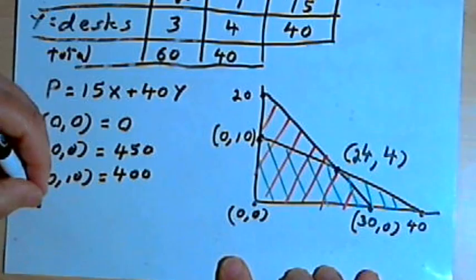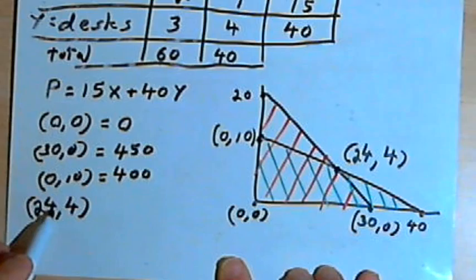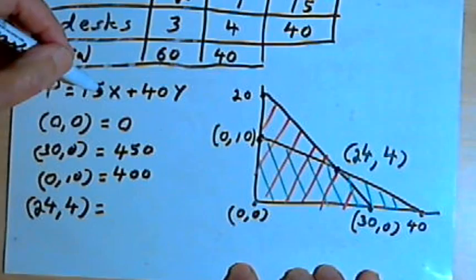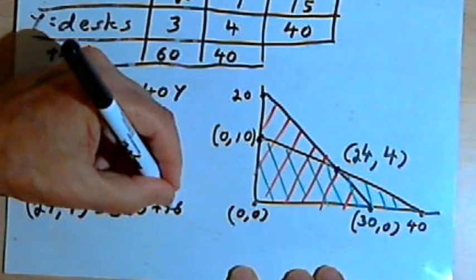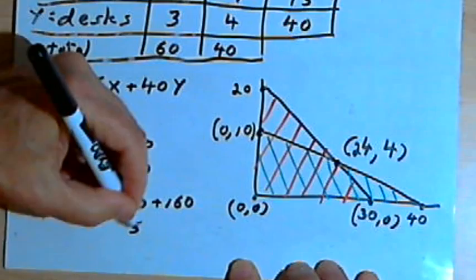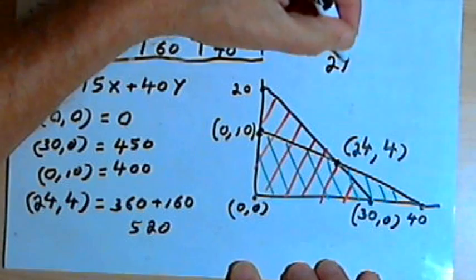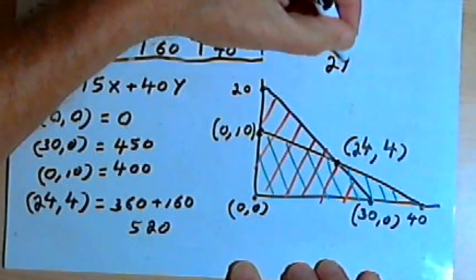Let's try this last point. This is 24, 4, which means they make 24 shelves and 4 desks. 24 times 15 is 360. And then they're making 4 desks, so that's 4 times 40 is 160. 360 plus 160 is 520. So the best thing they can do is make 24 shelves and 4 desks each week.